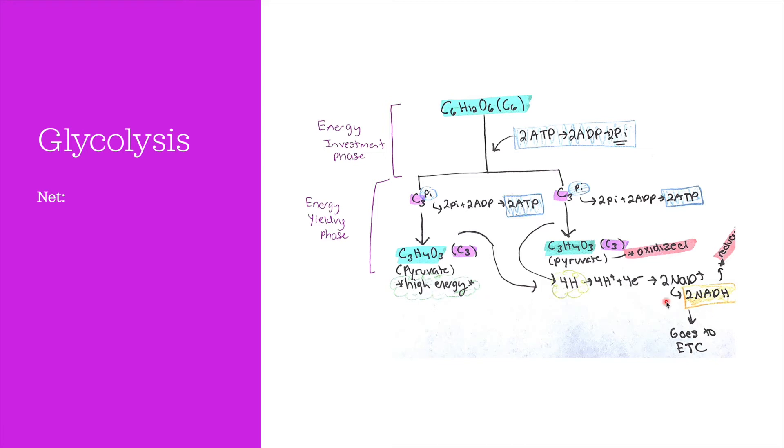The two NADH molecules travel to the electron transport chain for the final stage of cellular respiration. Remember that in glycolysis, pyruvate molecules are oxidized and NAD+ is reduced to NADH. The net products from the reaction are the two pyruvate molecules and two water molecules produced from glucose.